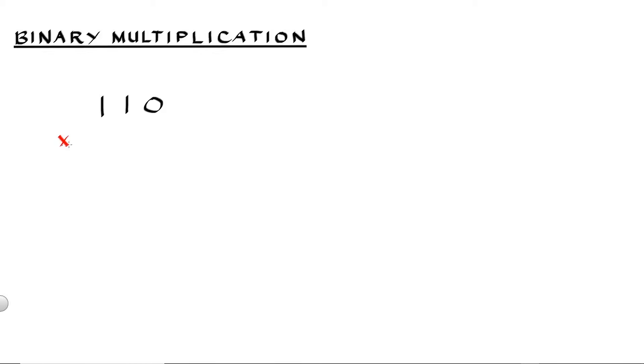Let's say we want to multiply 6 by 5, which in binary will be 1, 1, 0 by 1, 0, 1. 1 multiplied by 0 is equal to 0. 1 multiplied by 1 is equal to 1. And 1 multiplied by 1 is equal to 1.